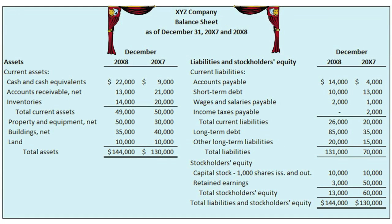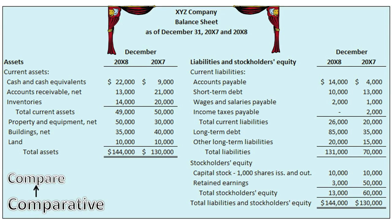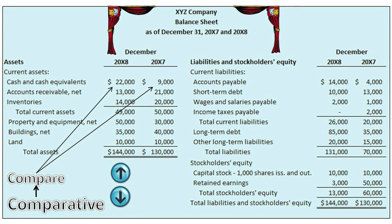A Comparative Balance Sheet is a balance sheet that provides account balances as of more than one date, as can be seen in XYZ's December 31st, 2000X7 and 2000X8 Comparative Balance Sheet below. Comparative comes from the word compare, which is to identify and evaluate differences between two or more similar items. Management prepares Comparative Balance Sheets to help users recognize positive and negative trends based on movements in account balances from one year to the next.